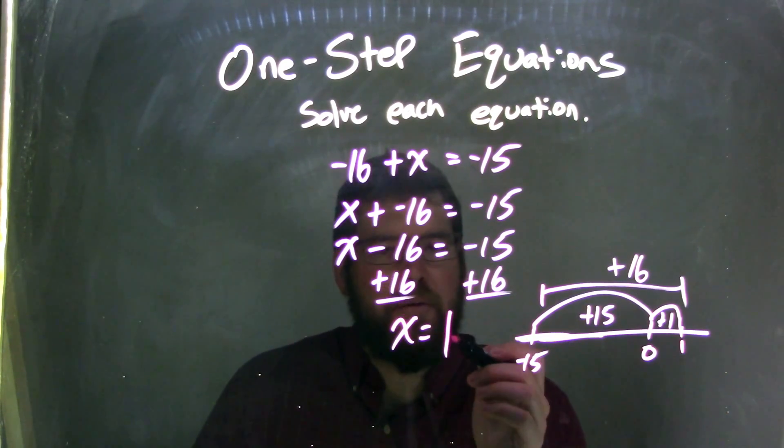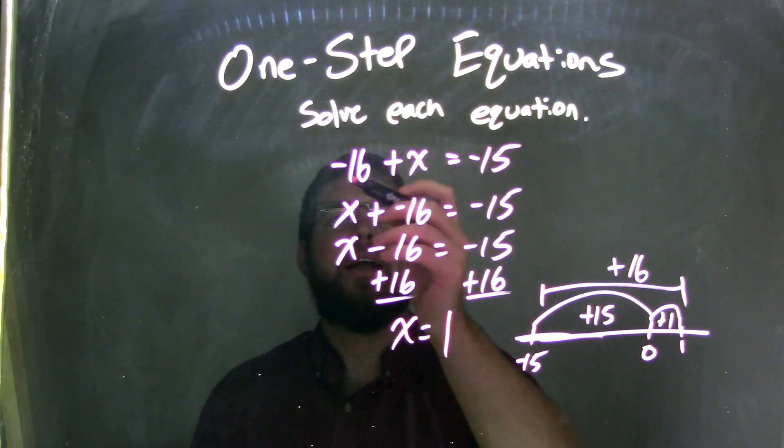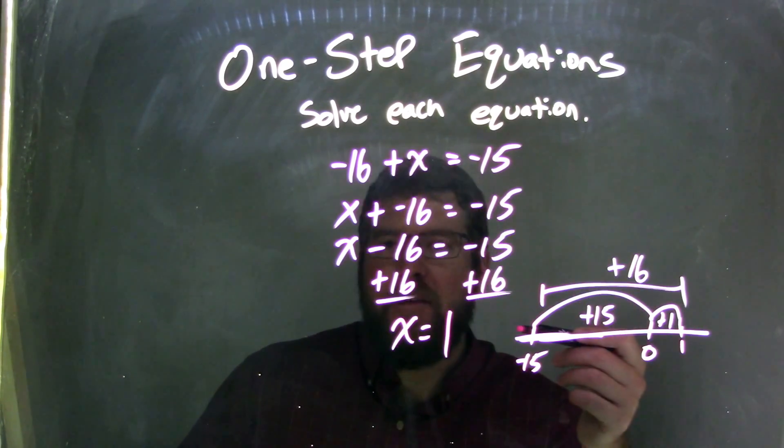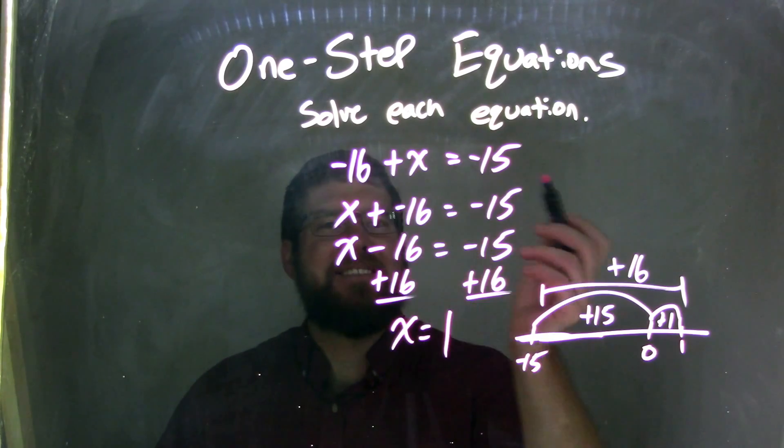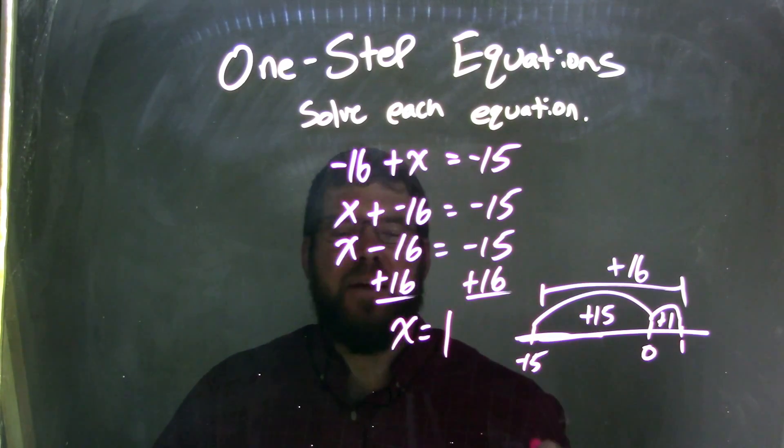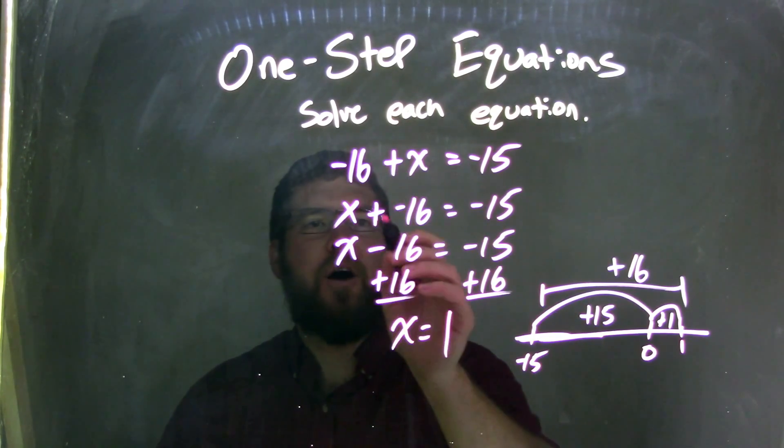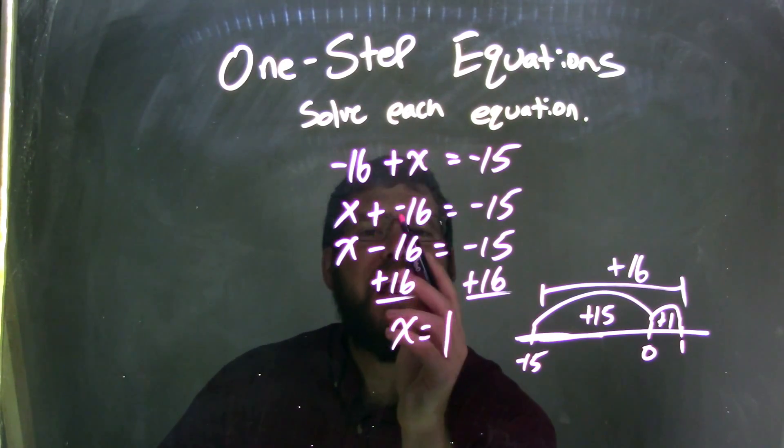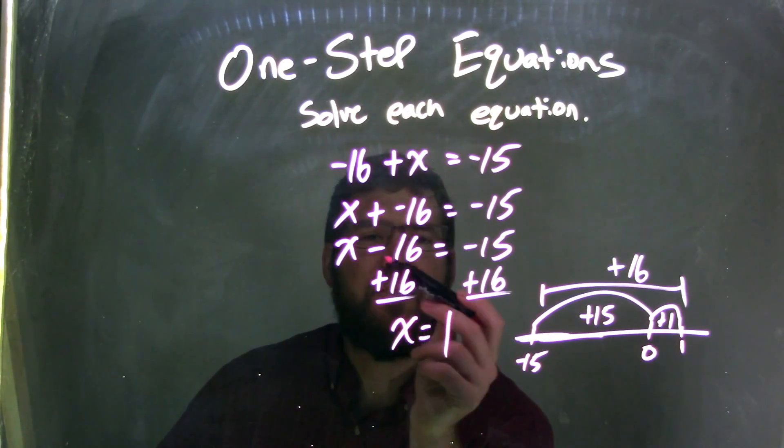So, our final answer is x equals 1. Let's recap. We start with negative 16 plus x equals negative 15. You don't have to do all the steps I just did. Right there, I recognize that I have to add a 16 to both sides to get rid of that negative 16. But, some people need to see it out. I'll use the commutative property to rewrite this to be x plus a negative 16. And, adding a negative is the same thing as subtraction. So, we have x minus 16.